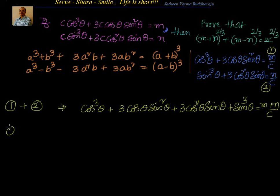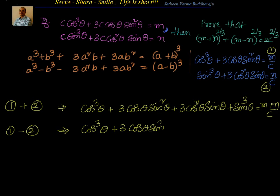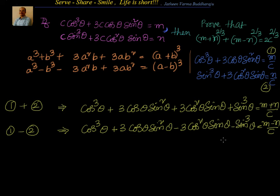Similarly, if you do equation 1 minus equation 2, you will have cos³θ + 3cosθ sin²θ − 3cos²θ sinθ − sin³θ, and that is equal to (m−n)/c.